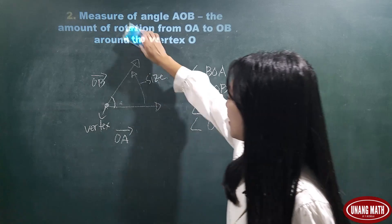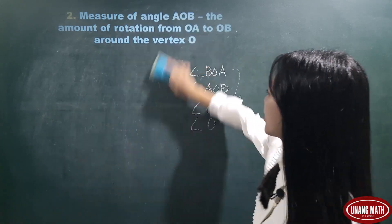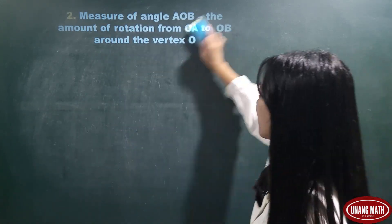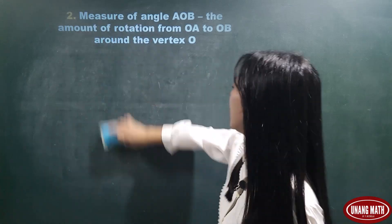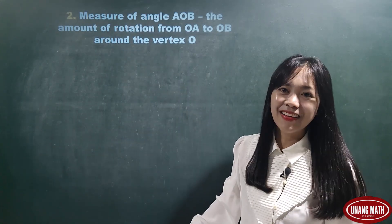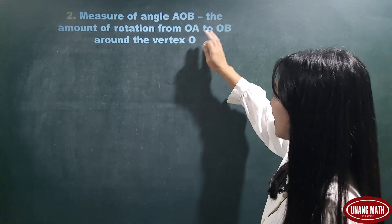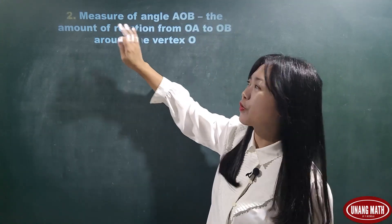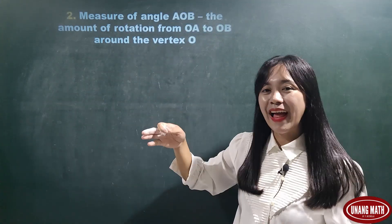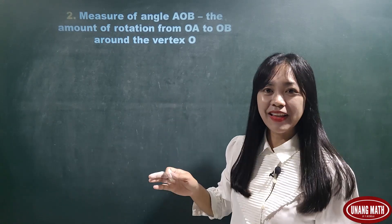Okay, as I mentioned, angle is measured in degrees or radians. What does it mean when we say measure of an angle? Measure of an angle is the amount of rotation from one line to another line around the vertex.